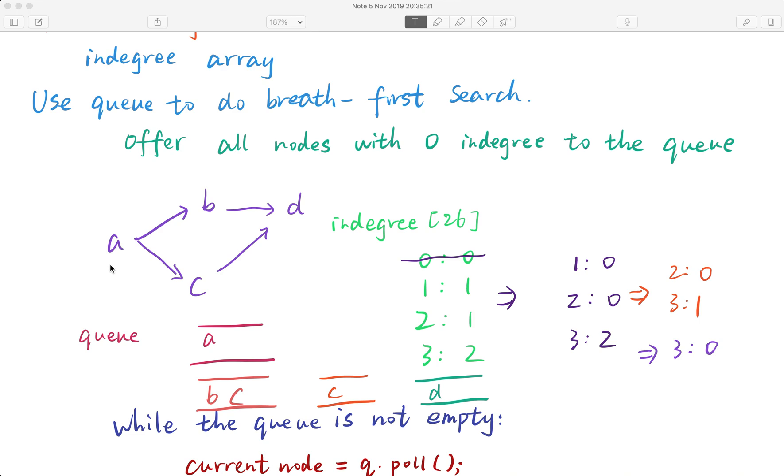There is no in-degree for node a, but there is in-degree one for node b, the same for node c. And for node d we have two in-degrees. So first we need this in-degree array. Why do we need it?